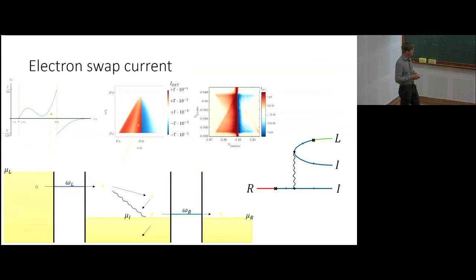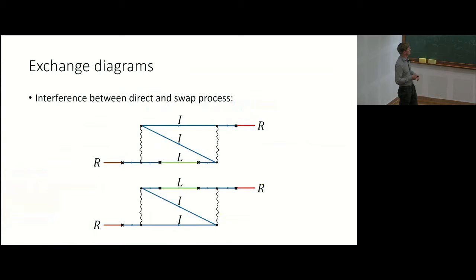Because the initial conditions of the two processes are the same and the electrons are indistinguishable, we need to account for this, which is exactly achieved by the exchange diagrams. The left side of the exchange diagram corresponds to the first process and the right side corresponds to the second process, describing the interference of the two processes. The second exchange diagram gives the complex conjugate of the first.